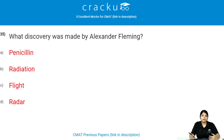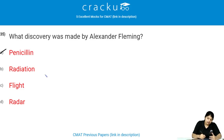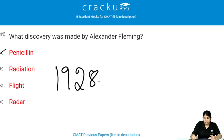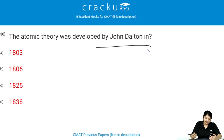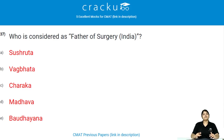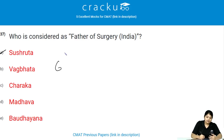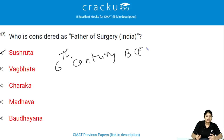What discovery was made by Alexander Fleming? Penicillin was the discovery made by Alexander Fleming in the year 1928. The atomic theory was developed by John Dalton in the year 1803. Who is considered the father of surgery? Sushruta is considered the father of surgery, in the sixth century BC he wrote the earliest works on medicine and surgery.